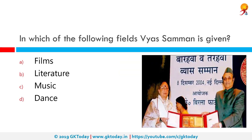In which of the following fields is the Vyas Samman given? The Vyas Samman is given in the field of literature. It is a literary award in India, first awarded in 1991 and awarded annually by the KK Birla Foundation.